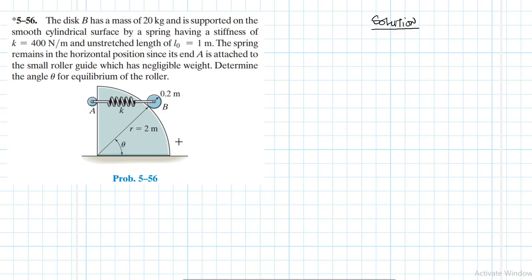Let's dive into the problem. So we've got a system here that has a small disk A with negligible mass and this small disk is connected to a big disk that has a mass of 20 kg.